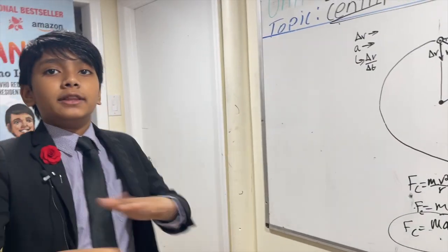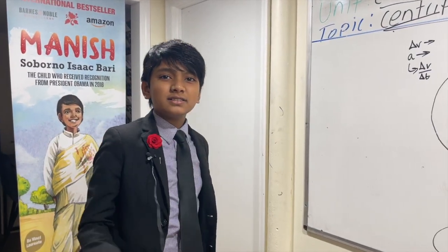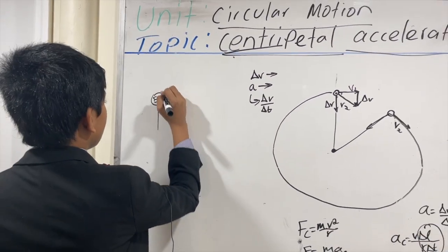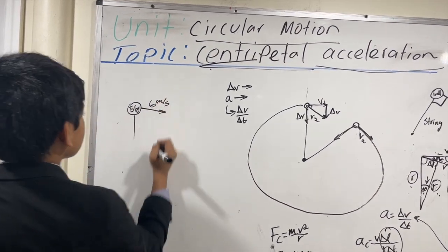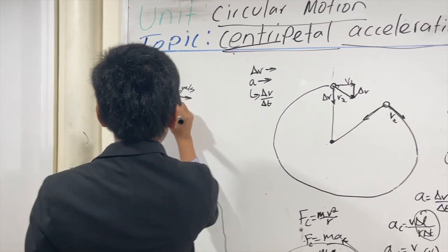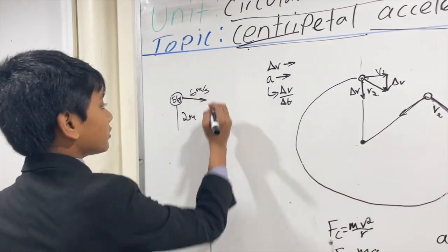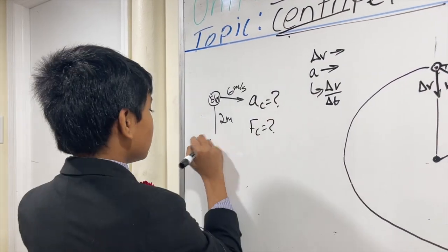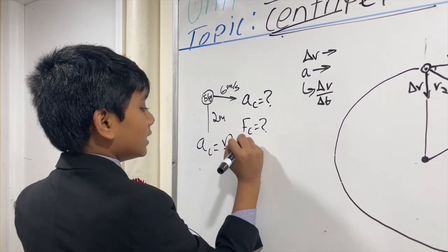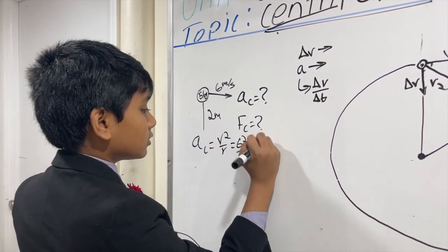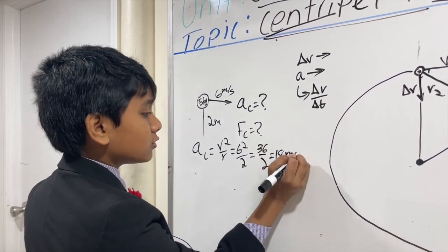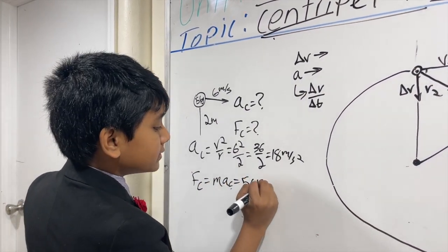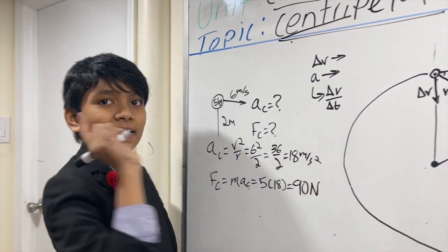So now, let's solve one problem with this to end it all off. Oh, it's just one second. Okay. So let's say that we have a 5-kilogram ball that is traveling at exactly 6 meters per second, uniform velocity, with a 2-meter radius. We're going to find AC and FC. Now, using our hard-earned equations, we can find AC V squared over R, 6 squared over 2, is equal to 36 over 2, equals 18 meters per second squared. And now, FC, just MAC, which is 5 times 18, is 90 newtons. That's it.